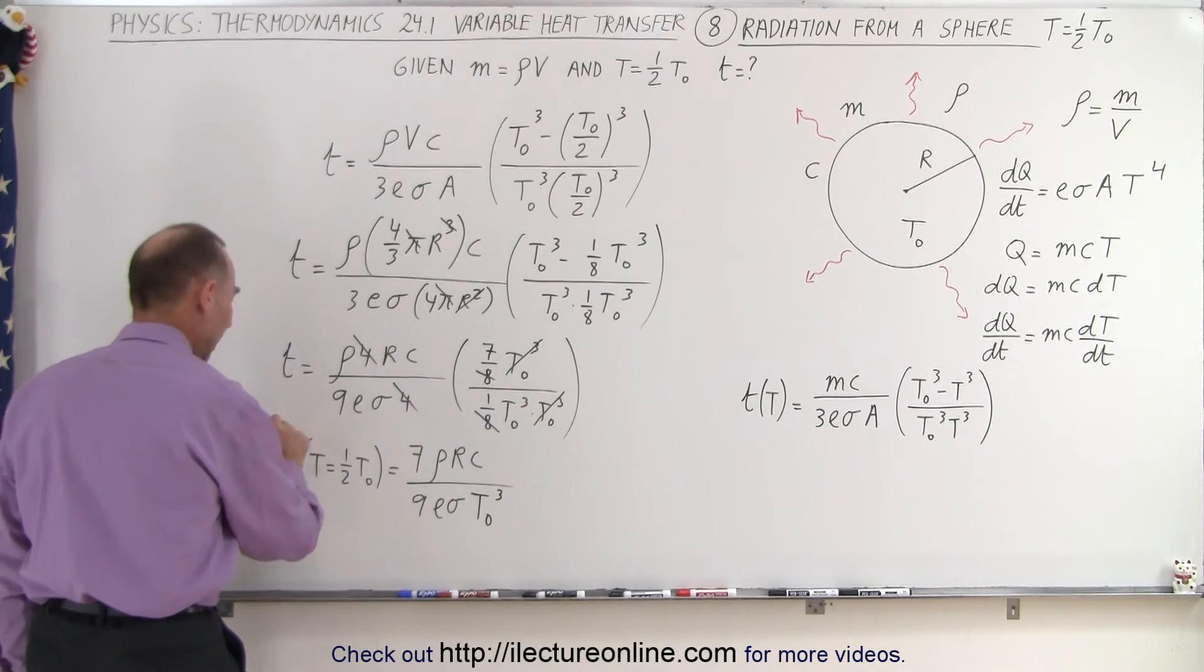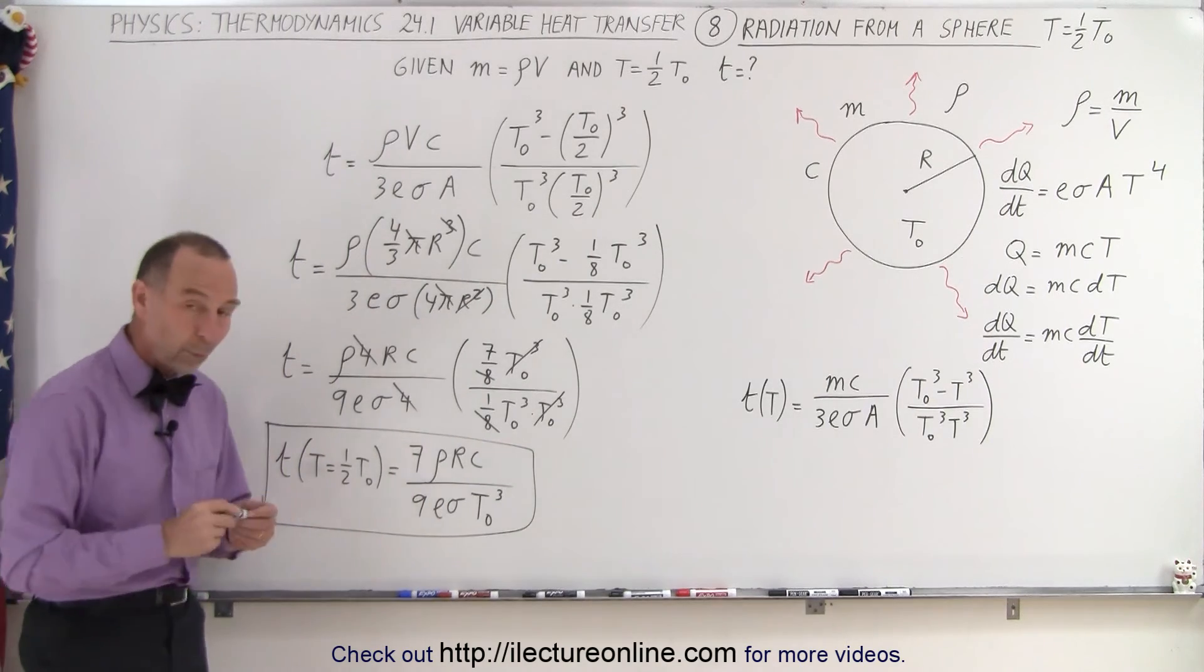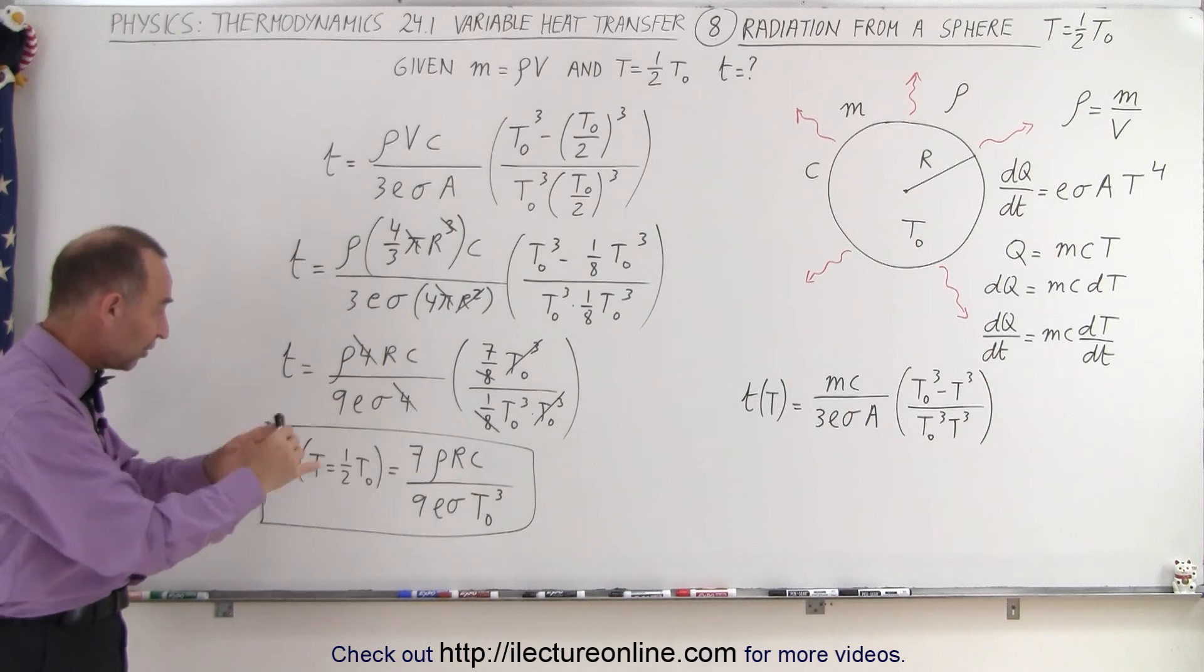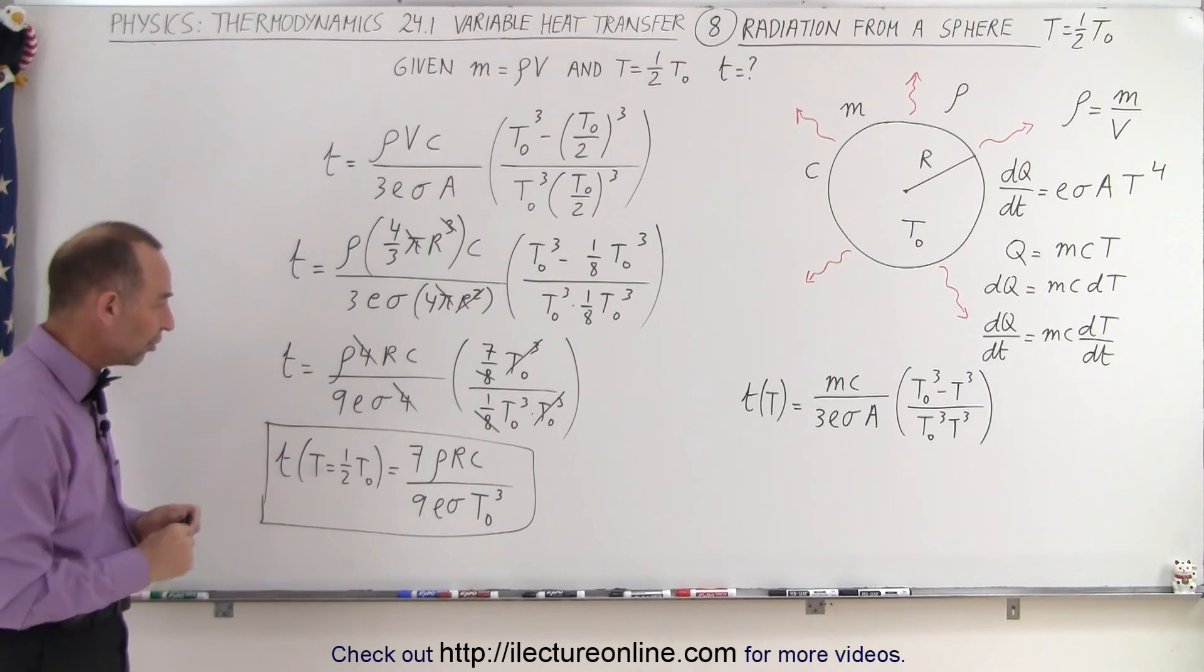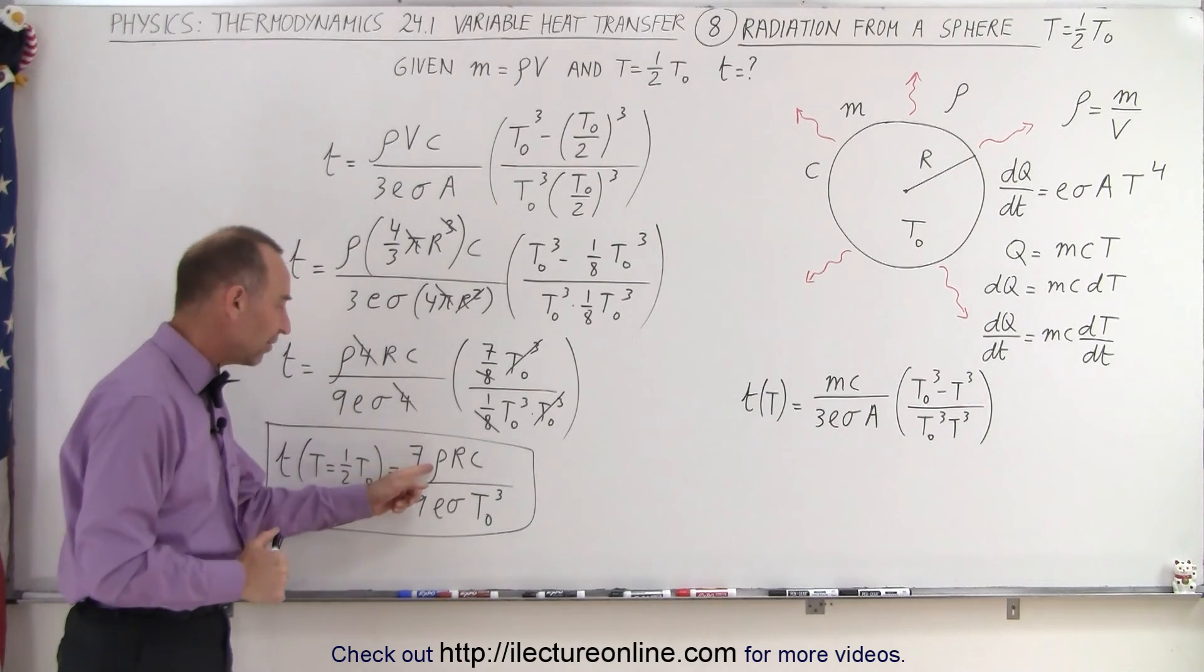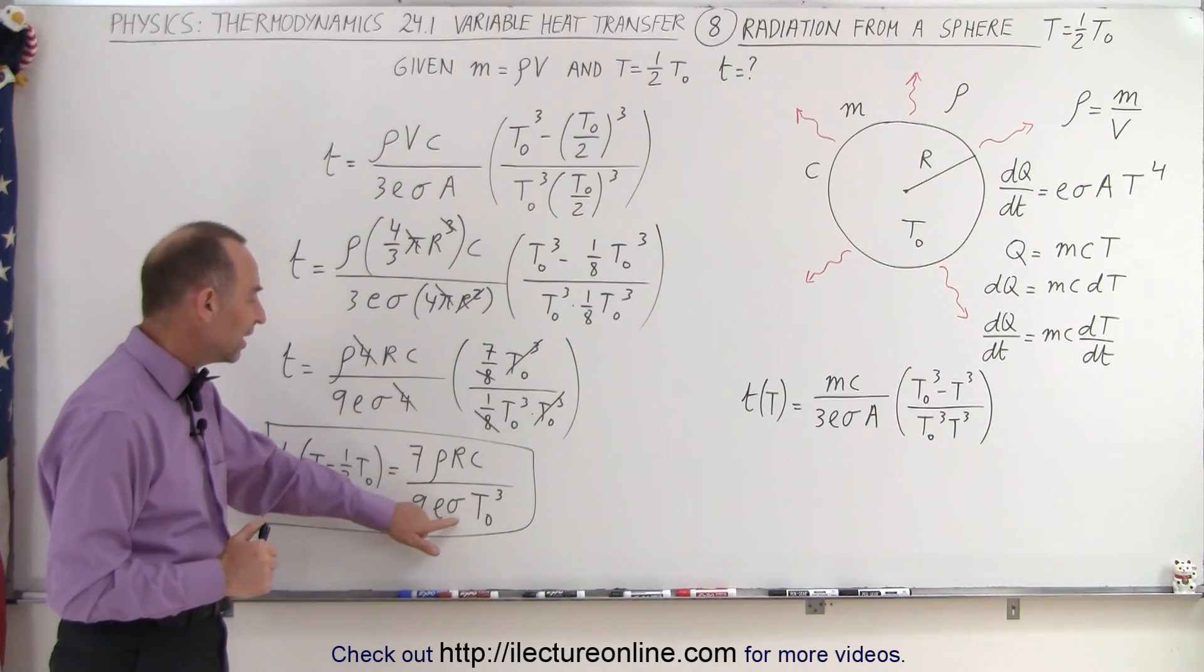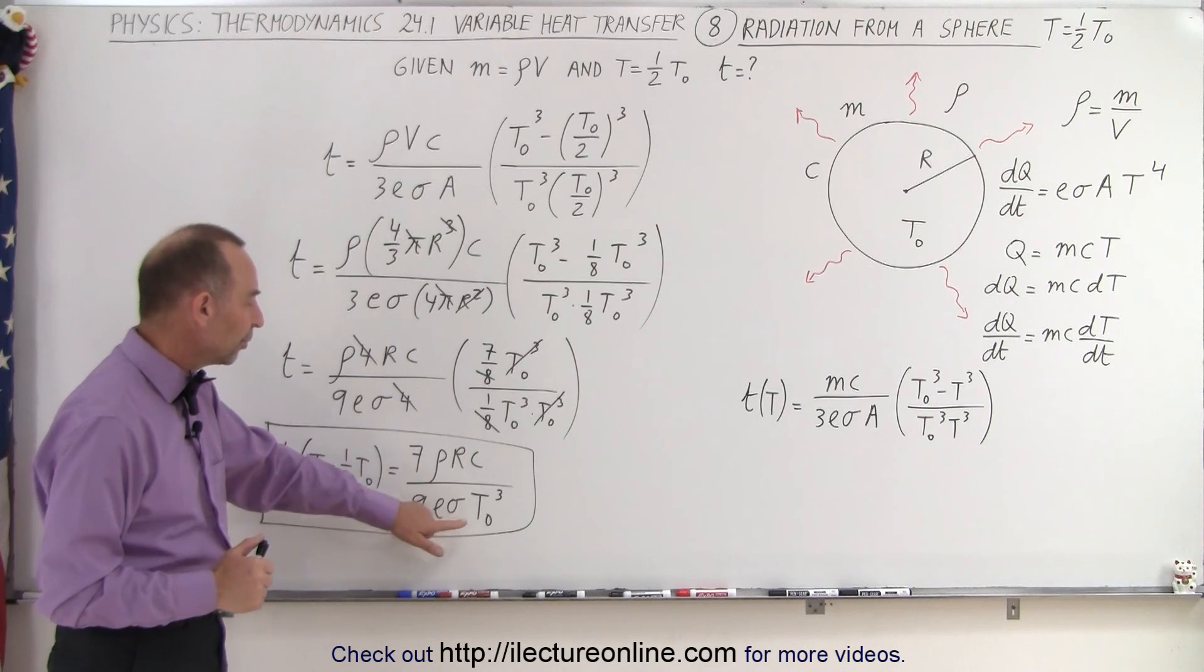And there we have a simplified expression that shows us what the time will be for the object, the sphere, to reach half its original temperature. And this is only based on the density of the object, the radius, the specific heat of the object, emissivity, and the Stefan-Boltzmann's constant.